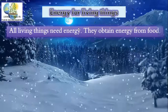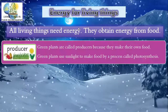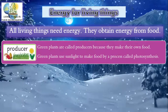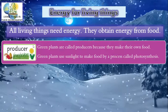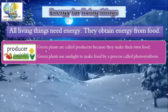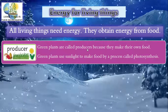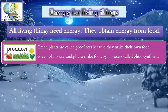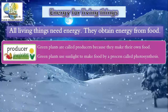Energy for living things: all living things need energy and obtain it from food. Producers are those that produce food — especially green plants, which are called producers because they make their own food using sunlight. The process by which green plants use sunlight to make food is called photosynthesis.